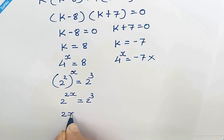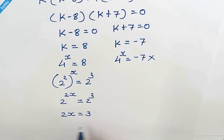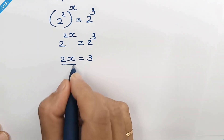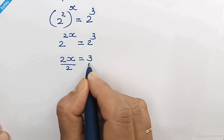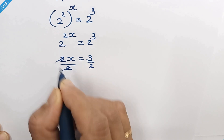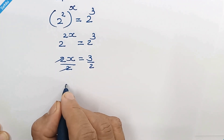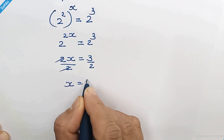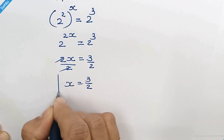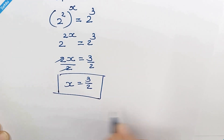So 2x is equal to 3. Dividing both sides by 2, these 2s get cancelled out, giving us x is equal to 3 over 2, and this is our answer.